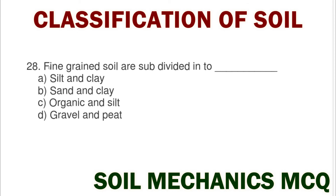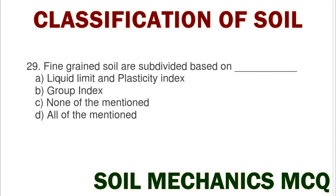Next question: fine grained soils are subdivided into option A silt and clay, option B sand and clay, option C organic and silt, option D gravel and peat. The correct answer is option A silt and clay.